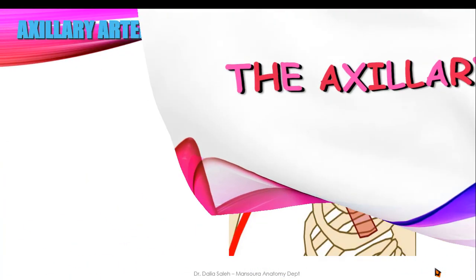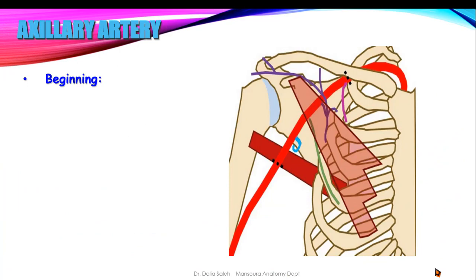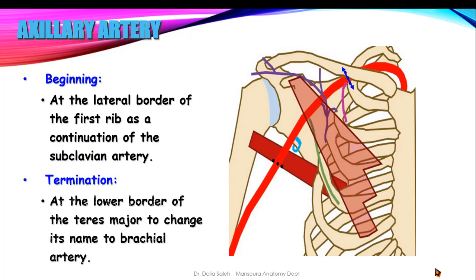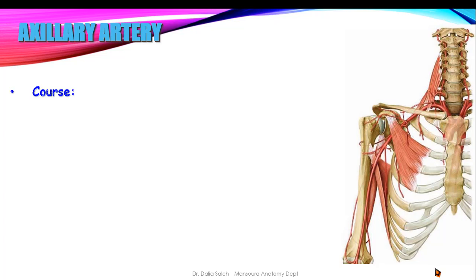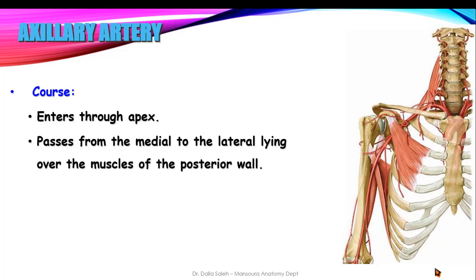Let's start with the axillary artery. The axillary artery begins at the lateral border of the first rib as a continuation of the subclavian artery. It terminates at the lower border of the teres major muscle by becoming the brachial artery. Along its course it enters the axilla through its apex, passes from medial to lateral in the axilla, lying over the muscles forming its posterior wall — namely the subscapularis, the teres major, and the latissimus dorsi muscles.